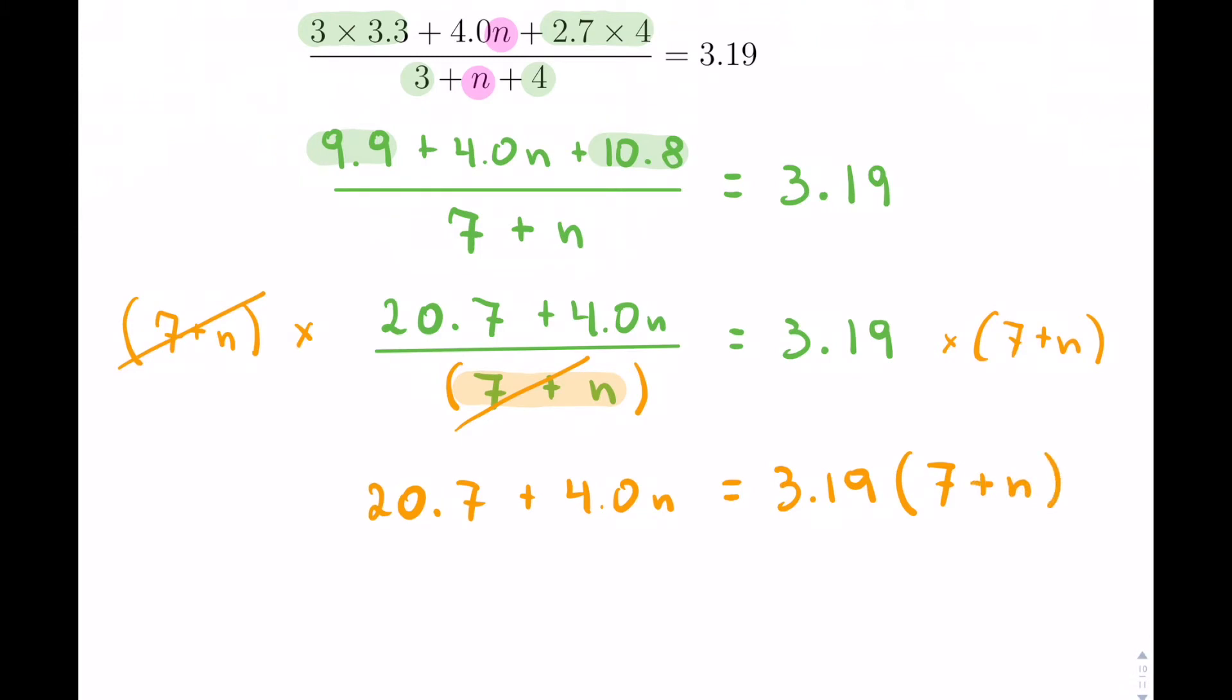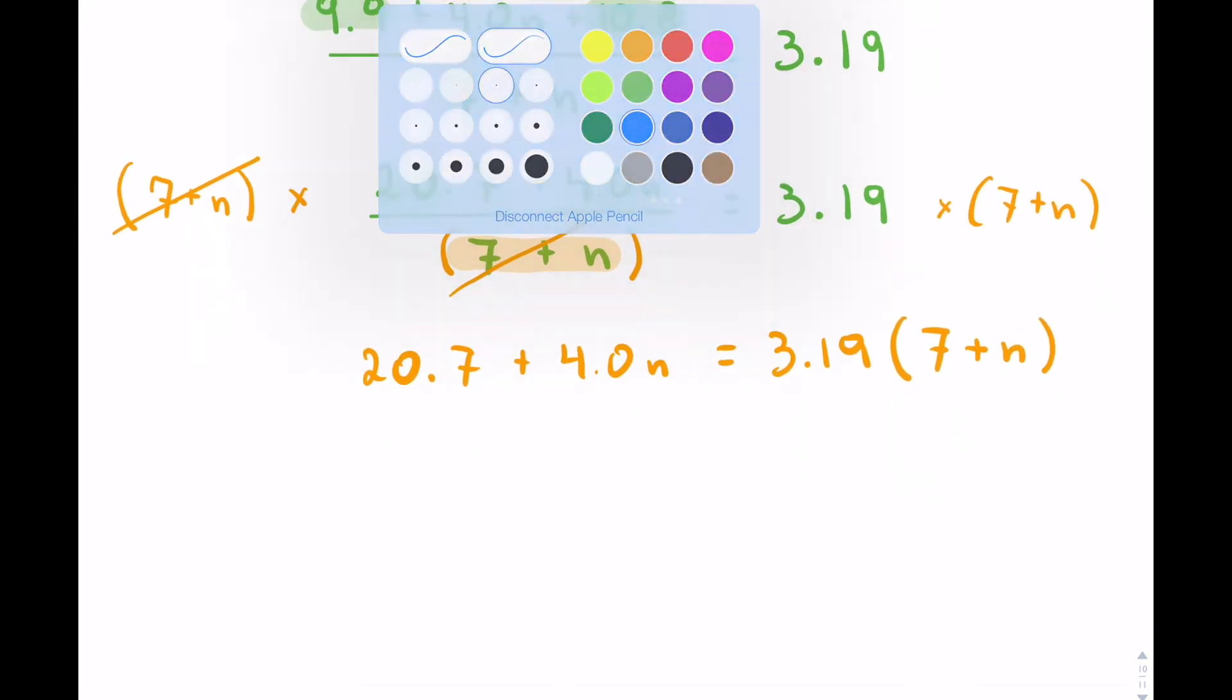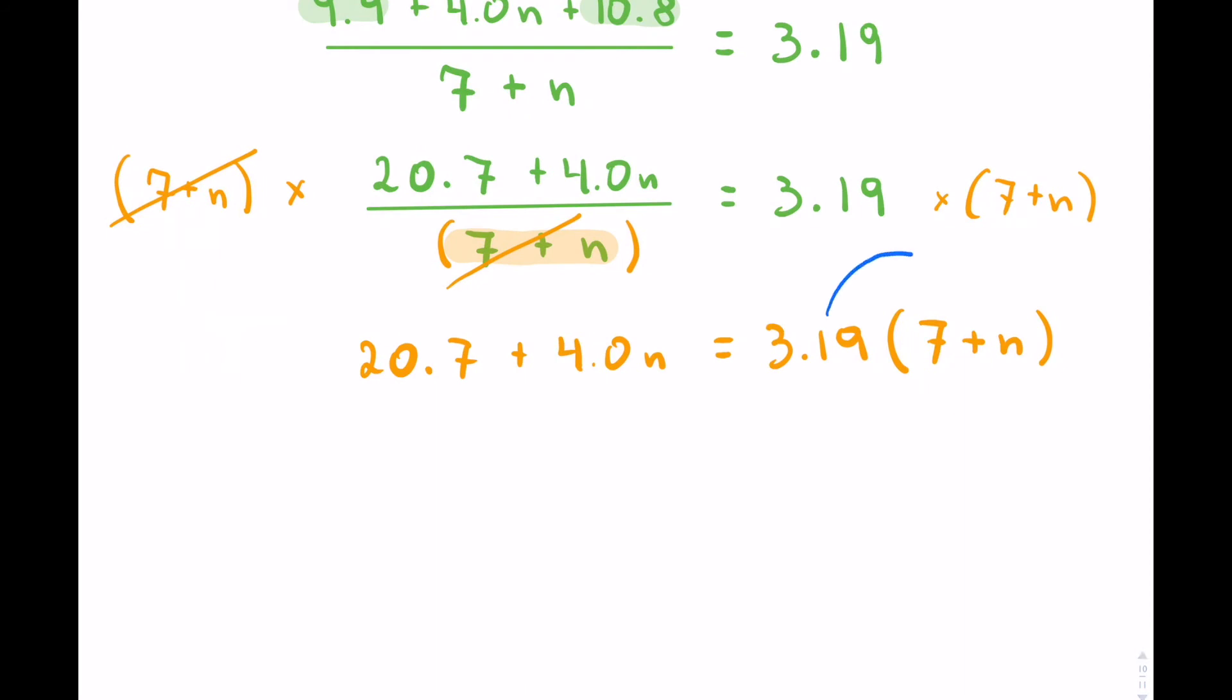What this allows us to do is now we just have our unknown in the numerator, at the top, and it just becomes a standard regular problem. On the right-hand side, 3.19 times 7 is 22.33 plus 3.19 times n, which is 3.19n. Nothing to do on the left-hand side.